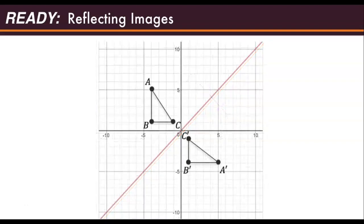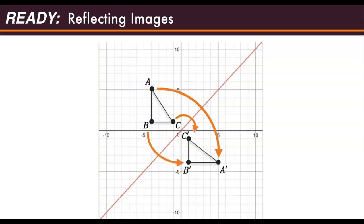Here is another example. We see that the triangle ABC is reflected over the line y equals x. How does each pre-image point compare to its corresponding post-image point? What can you generalize about reflections over the line y equals x?